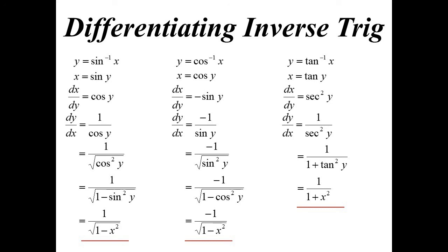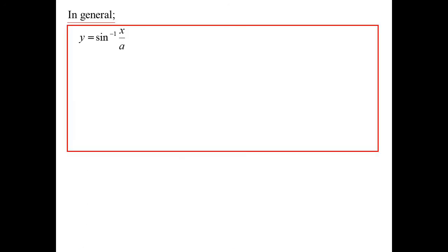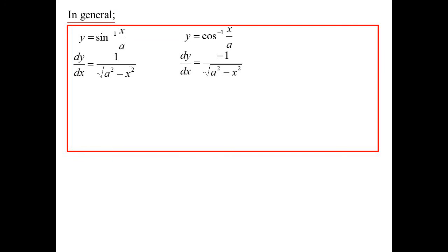So there are the three basic derivatives. But let's generalise these. If it's a linear function with x over a, then the derivative of inverse sine is 1 over the square root of a squared minus x squared. Inverse cos is the same but negative: minus 1 over the square root of a squared minus x squared. And inverse tan — you've got to be careful — it's a over a squared plus x squared.